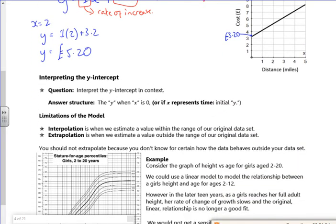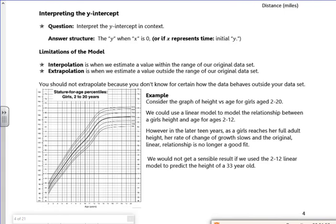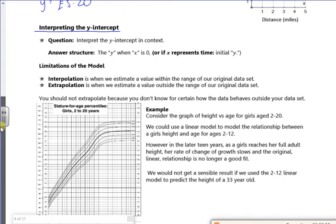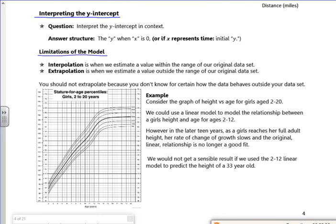Right then. My word, look at this. So it says, interpreting the y-intercept. So we might ask you to interpret the y-intercept. So the y, when x is 0, or if x represents time. So what we see, it tends to be like a standard charge. It's when nothing's happened. It's what you pay before you do anything. So that's kind of like that one there. It's just kind of stuck there in the bottom, isn't it really? I guess it's linked to the £3.20 from the previous one. Right, so we've got limitations of the model.